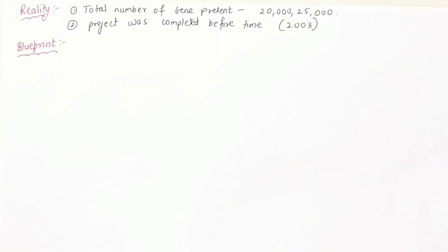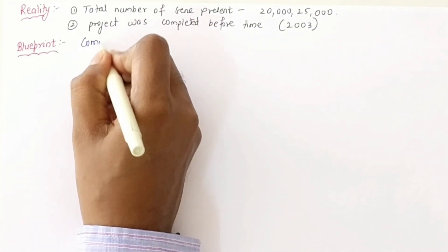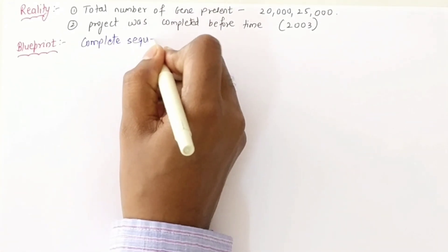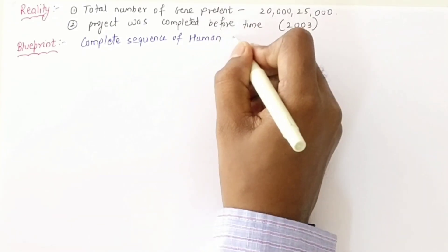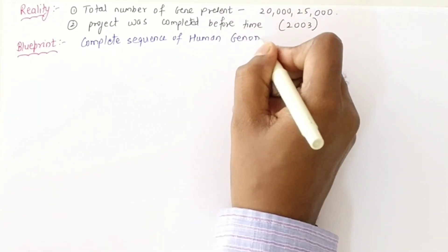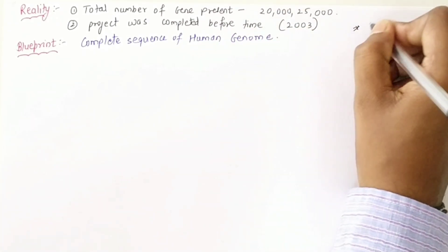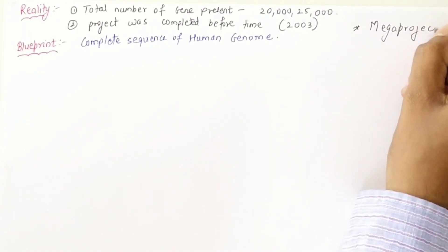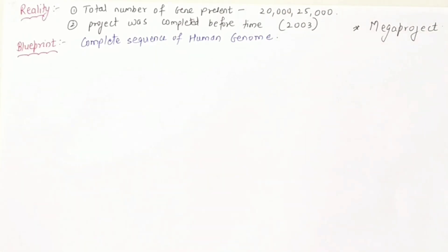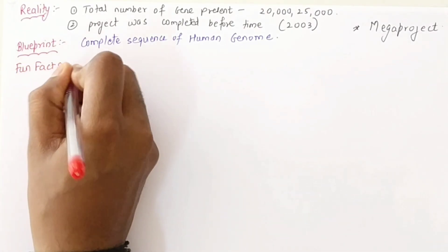The complete sequence of the human genome is called the blueprint. The Human Genome Project was a mega project because many scientists and much funding were involved.